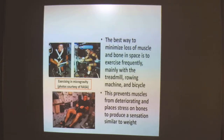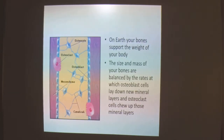The best way to minimize loss of muscle and bone in space is to exercise frequently, mainly using a treadmill, rowing machine, and bicycle. This prevents muscles from deteriorating and places stress on bones to produce a sensation similar to weight. On Earth, bones support the weight of the body. The size and mass of bones are balanced by the rate at which osteoblast cells lay down new mineral layers and osteoclast cells which break up those mineral layers.